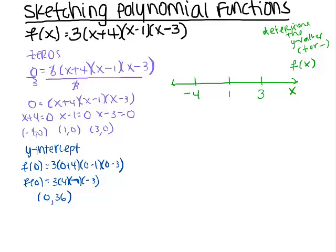This f of x number line will determine whether the y-values are positive or negative. I can already put a sign on here because I figured out that the y-intercept was a positive number. The y-intercept is where x is zero, which on this number line is between negative 4 and positive 1. So I'll put a little plus sign there, telling me that between negative 4 and 1, my curve should be above the x-axis.